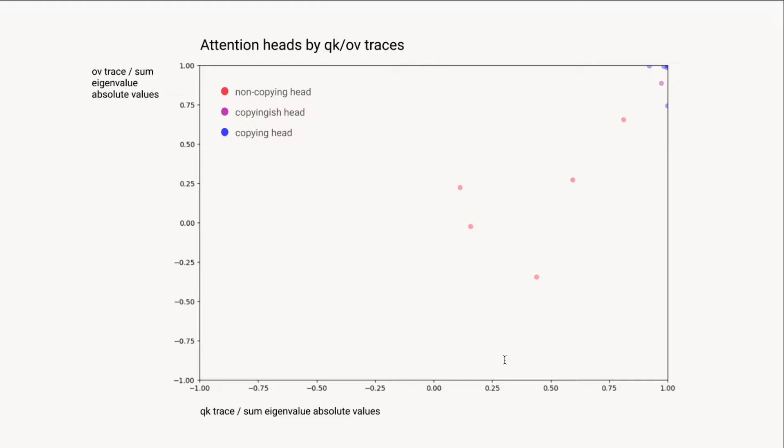One final thing worth mentioning is just like we were able to do a histogram in the video on eigenvalues to quickly summarize the heads in a really dense way. We can put the sum of the QK eigenvalues divided by the sum of their absolute values on one axis, and the same thing for the OV values on another axis. Then attention heads that have both very positive on both of those, so they tend to really copy and tend to prefer to look at places where a token is the same, they'll be up in that corner. That's an even denser way to really systematically pin down the induction heads.